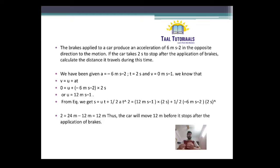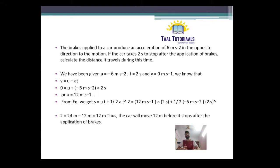We need to find what details are given. A is equal to minus 6 because of the opposite direction, T is equal to 2 seconds, and since it is going to stop, V is equal to 0. We need to find distance, but before that we need to find U. Using V is equal to U plus AT, we get U equal to 12 meter per second. Now, using S is equal to UT plus half AT square, with U as 12 and T as 2, we solve and get S equal to 12 meter. Thus, the car will move 12 meter before it stops after the application of brakes.